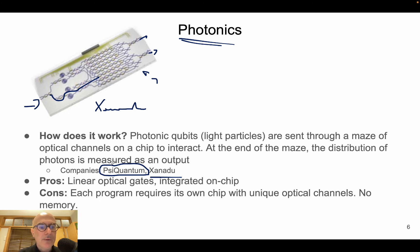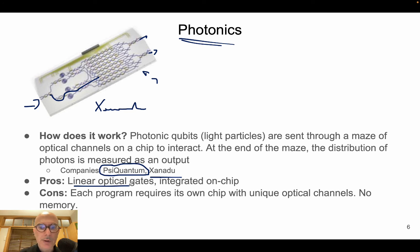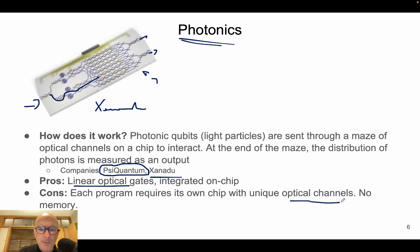The advantages of using photonics for quantum computing: we already know this technology — linear optical gates and integrated photonics on chip are quite advanced, and it looks very promising. The disadvantages are that each program requires its own chip with a unique optical channel, making chip development cumbersome. Another major difficulty is that there is no actual memory to store data — it is basically a continuous flow of photons in superposition and then measurement.